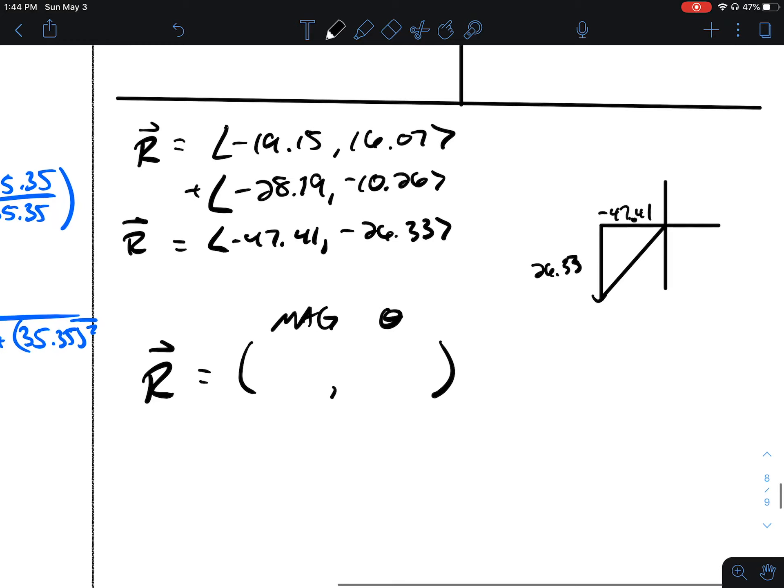To find this magnitude, it's the square root of the x component squared plus the y component squared.